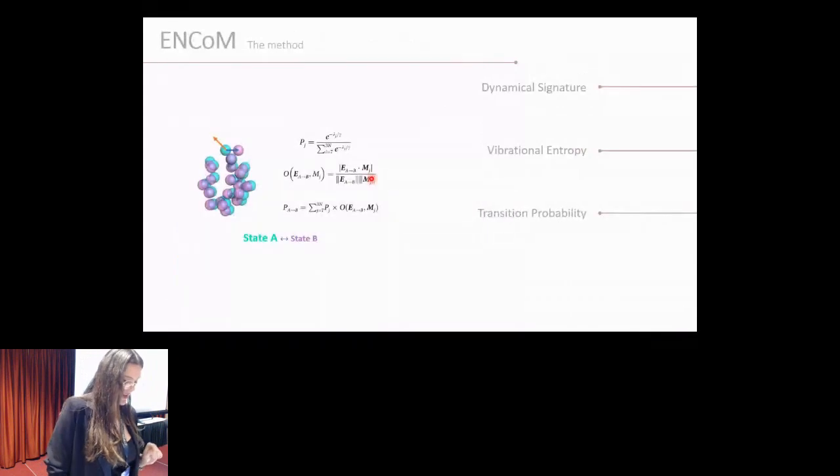After that, we used for the first time, I believe, another of the functions that ENCOM has, which is the transition probability function. Because an increased flexibility of one specific residue not necessarily will make this residue move to one specific other position. So instead of just using this increased flexibility to try to understand if this protein is more prone to go to another conformational state, we did this overlap between the eigenvector that describes the movement of those residues and the movement needed to go from one conformational state to the other, in the case of spike, from the closed state to the open state.